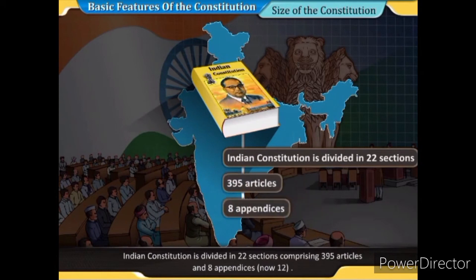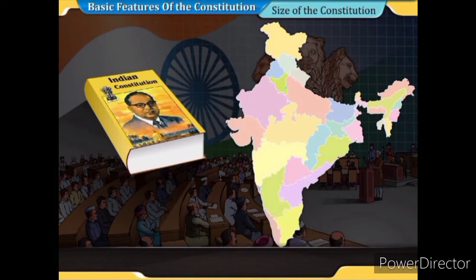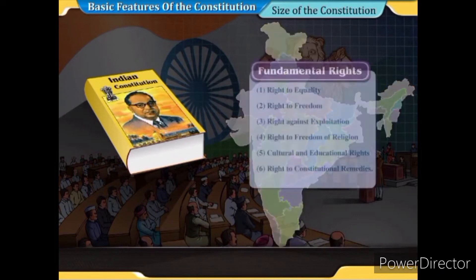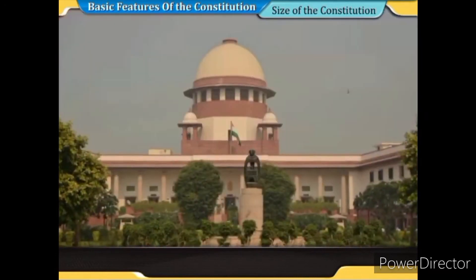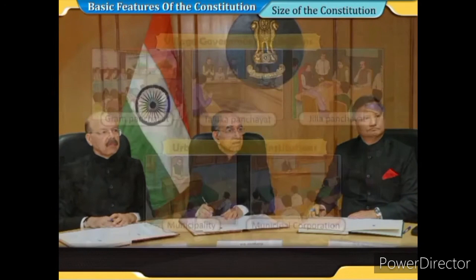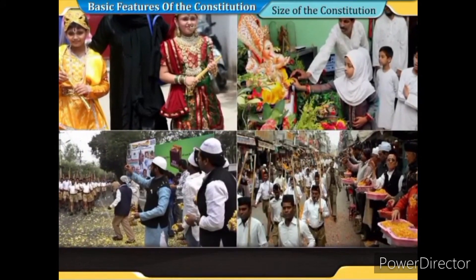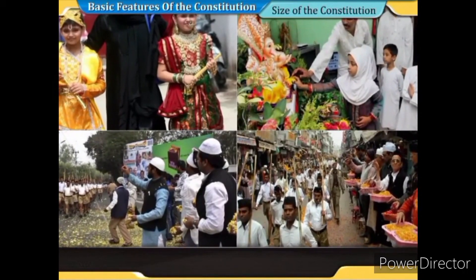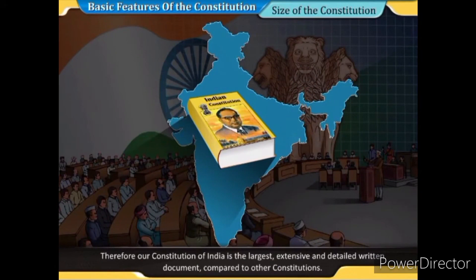The Constitution originally had 8 appendices, now 12. It comprises provisions for state administration, state inter-relations, fundamental rights, principles for political policies, judiciary, election commission, government institutions, minorities, scheduled castes, and deprived groups. Therefore, the Constitution of India is the largest, most extensive, and detailed written document compared to other constitutions.